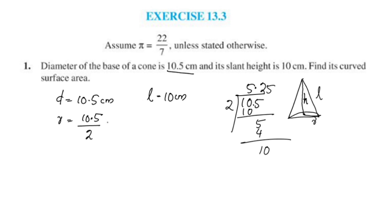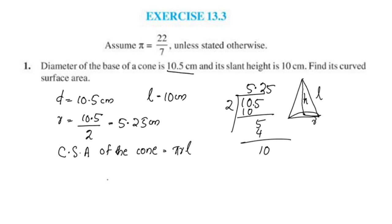So radius is equal to 5.25 centimetres. Now, curved surface area — CSA — of the cone is equal to pi R L.